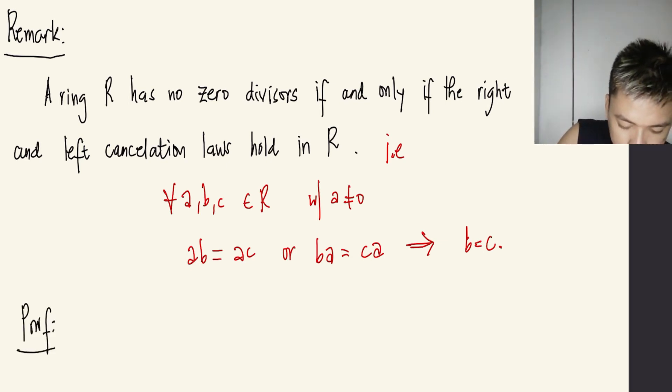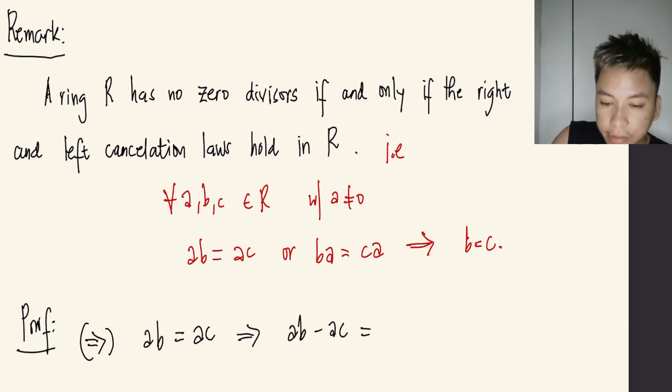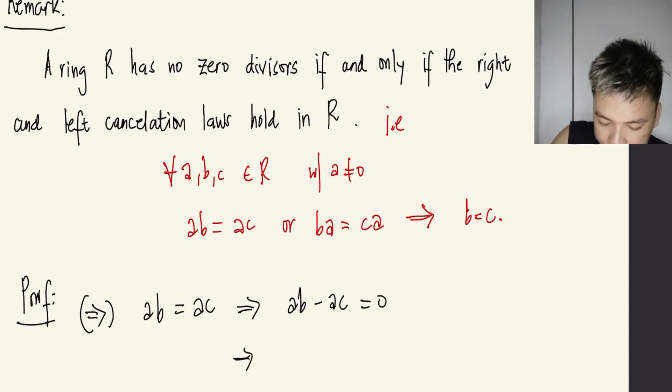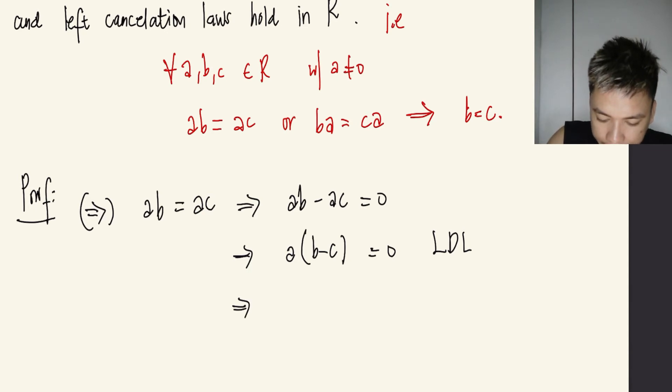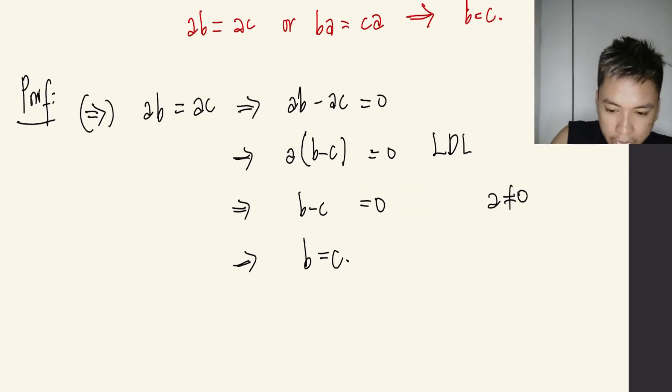So let's start first with the forward direction. Starting with AB equals AC, this will imply that AB minus AC equals 0. And I can write this as A times (B minus C) equals 0. This is left distributive law. And I can have B minus C equals 0 here since I considered my R has no zero divisor. That means your A is not 0, so this gives B equals C.